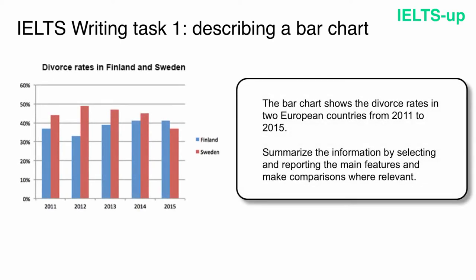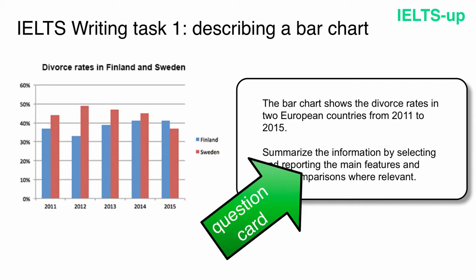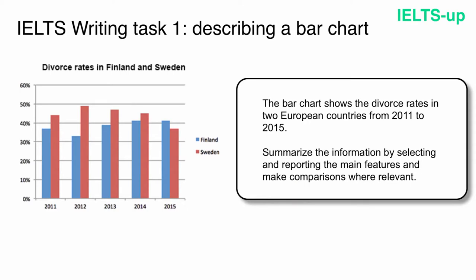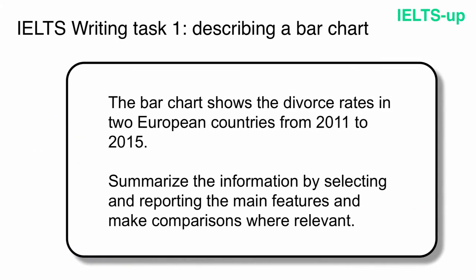Here is an example of a writing task 1 question with a bar chart. You have a bar chart and a question card with some basic information about your chart. The first thing you need to do is to read this information attentively. The bar chart shows the divorce rates in two European countries from 2011 to 2015. Summarize the information by selecting and reporting the main features and make comparisons where relevant.